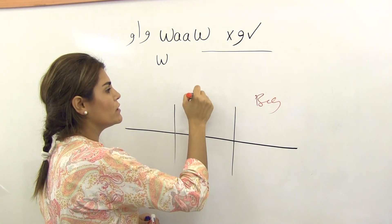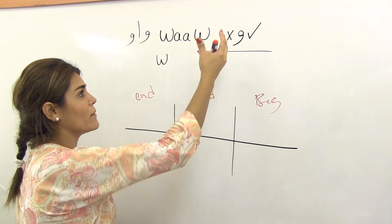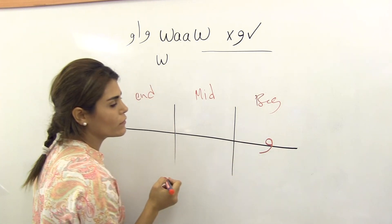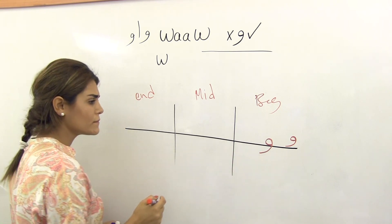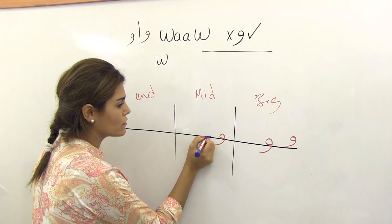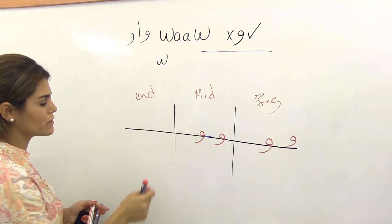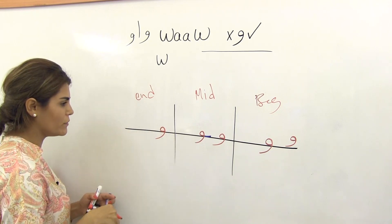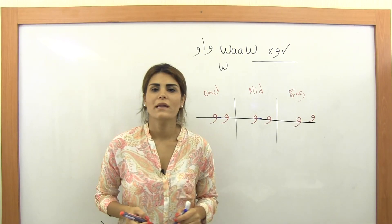I'll show Waw in different positions so you can see it always looks the same as the original form. At the beginning: the circle of Waw is on the top and the tail goes below. You can write the whole thing on the line but the most common handwriting has the tail dipping below. In the middle: same thing, and if it connects you draw the connection before it. At the end: nothing changes — no new or surprise shape since it doesn't connect to the left side.